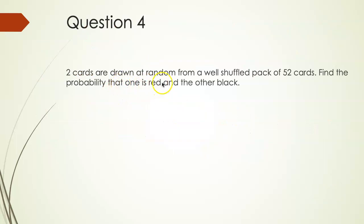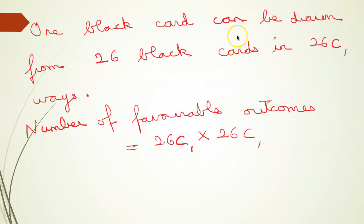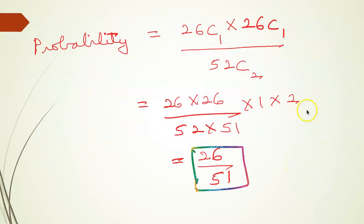Question 4: Two cards are drawn at random from a well-shuffled pack of 52 cards. Find the probability that one card is red and the other black. Total number of outcomes is 52 C2. One red card is drawn from 26 red cards in 26 C1 ways, and one black card from 26 black cards in 26 C1 ways. So probability is 26 C1 into 26 C1 by 52 C2, which simplifies to 26 by 51.